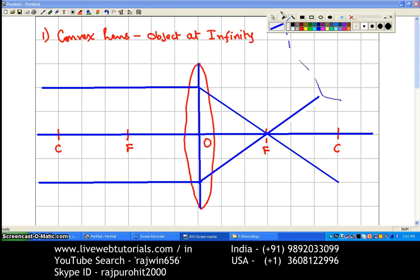Now you can see both of these rays are meeting at F, so the image that is produced will be at F.